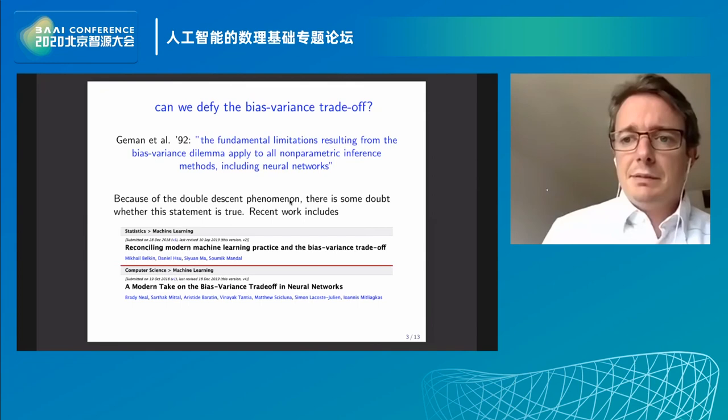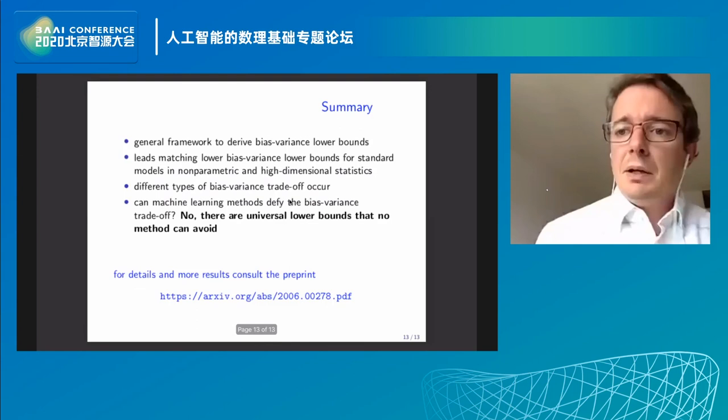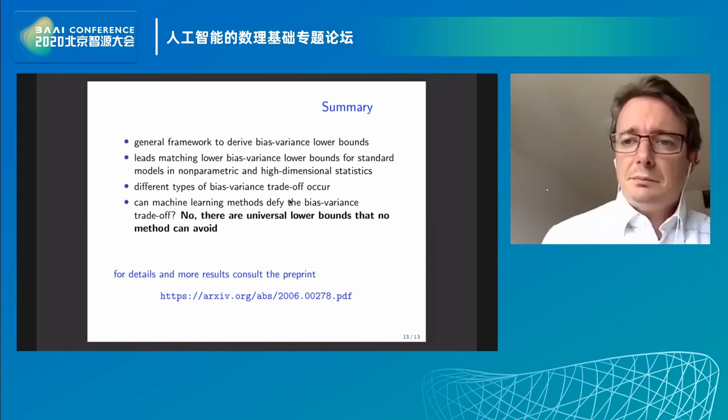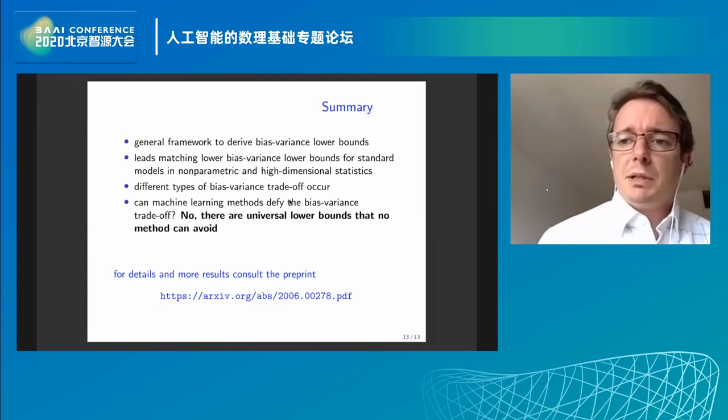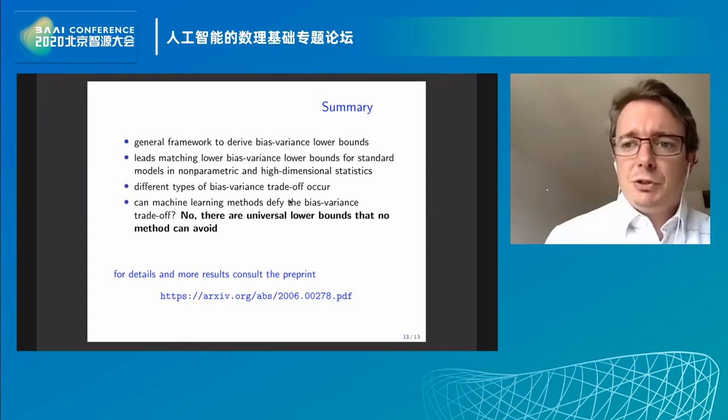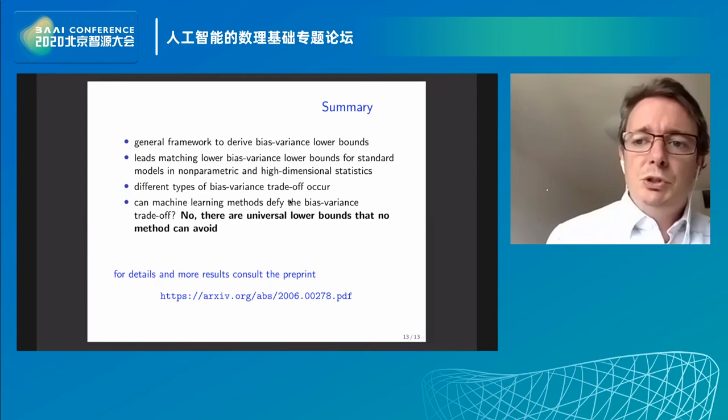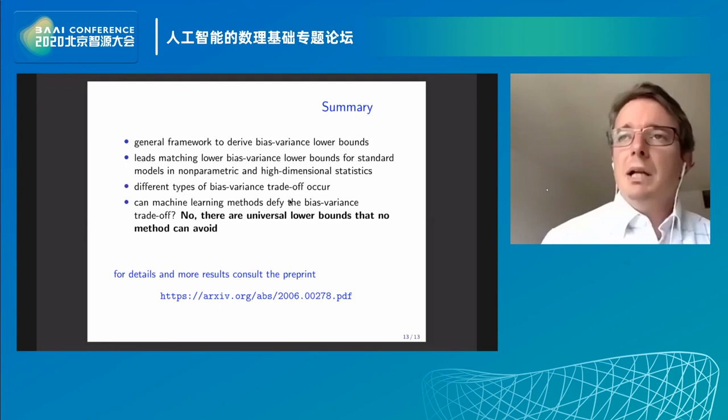To summarize: depending on the statistical model, there are different versions of the bias-variance tradeoff that can be stronger or weaker. In the high-dimensional model we proved a very strong version that is not U-shaped. The U-shaped bias-variance tradeoff is really something associated with function estimation problems. Those are the main results — for full proofs and details, please consult the paper.